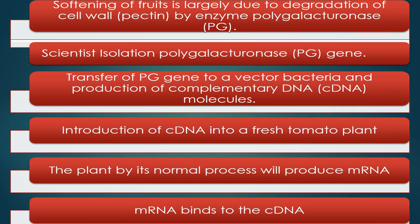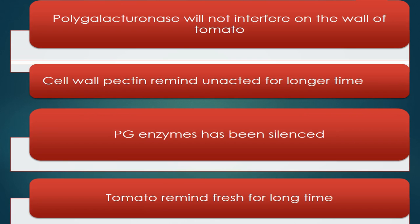The enzyme polygalacturonase dissolves the outer pectin surface of the tomato, making it wrinkled. Scientists isolated the PG gene and obtained the mRNA, then used reverse transcriptase to create complementary DNA — cDNA. The complementary DNA binds to the mRNA, silencing the enzyme that would otherwise be produced. Since the PG gene is silenced, it does not act on the pectin wall, which helps to prolong the ripening of the tomato.